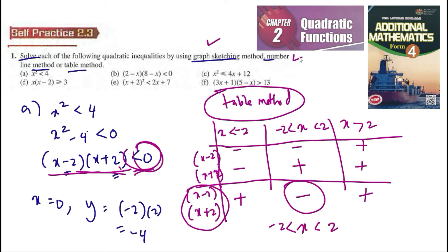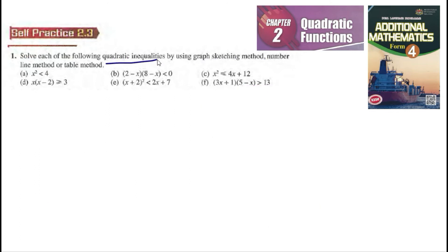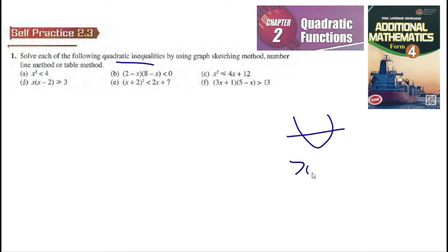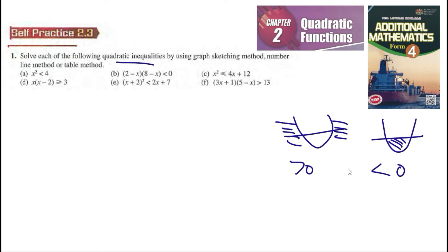So those are the three methods: graph sketching, number line method, and table method. The easiest shortcut for inequalities is: if larger than 0, the range is outside; if smaller than 0, the range is inside.